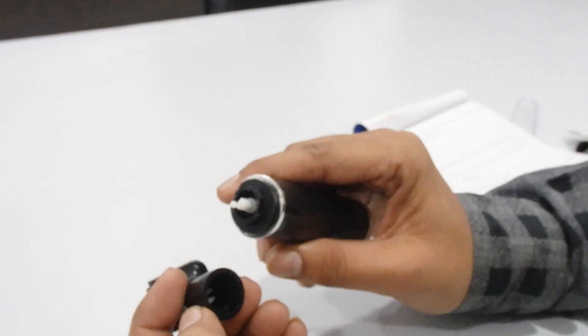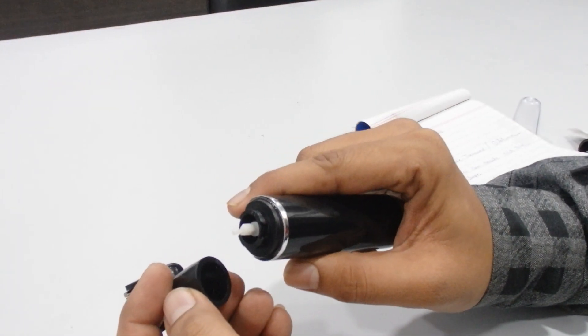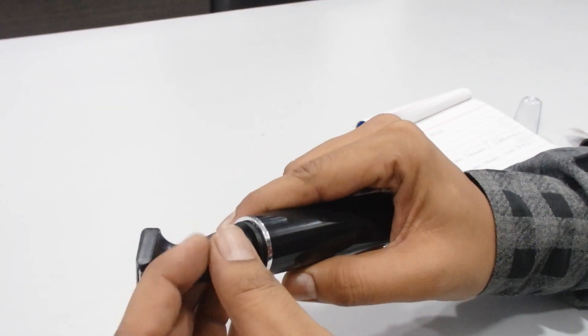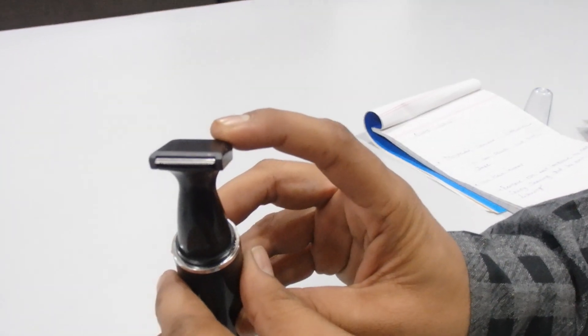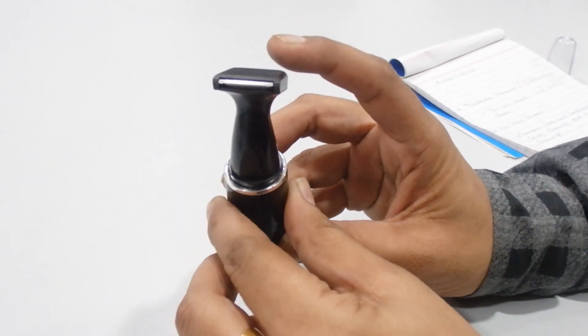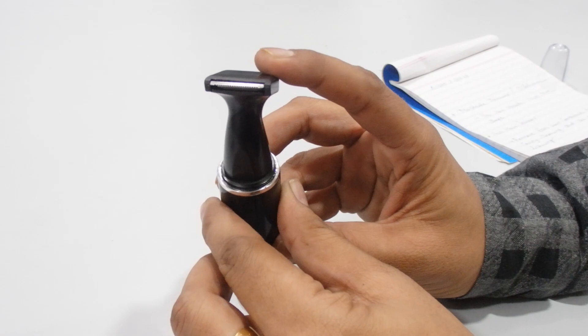You have to adjust both points and then turn it around. This is the beard trimmer. With the help of this, you can create your own shape with the beard.